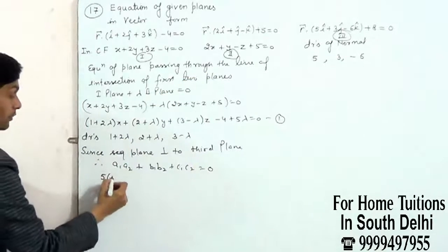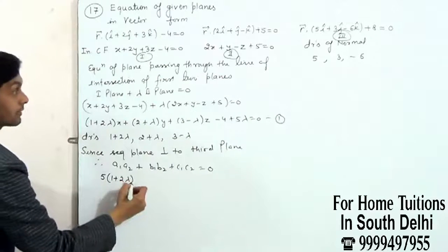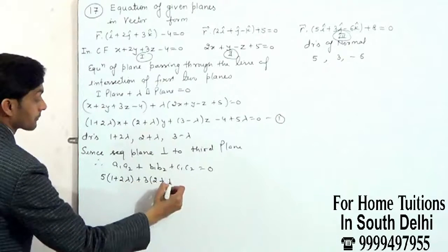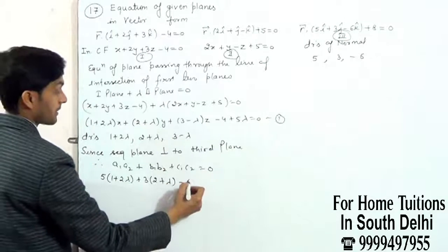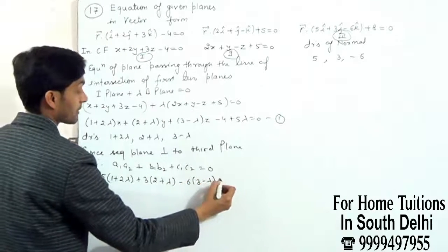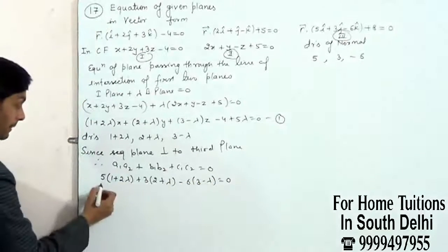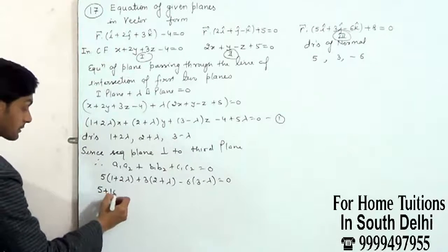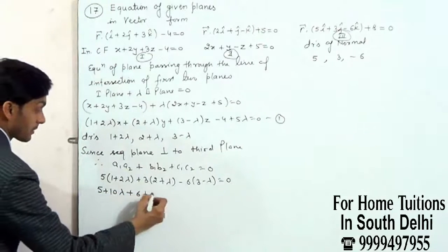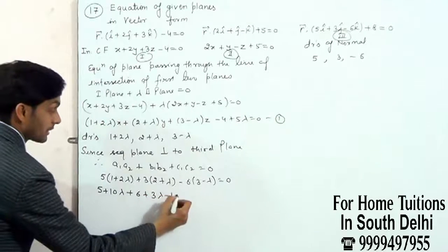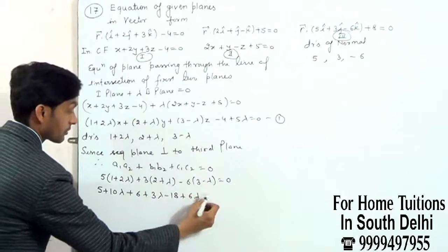5 times (1 plus 2 lambda) plus 3 times (2 plus lambda) minus 6 times (3 minus lambda) equals 0. 5 plus 10 lambda plus 6 plus 3 lambda minus 18 plus 6 lambda equals 0.